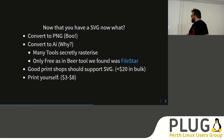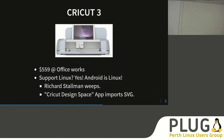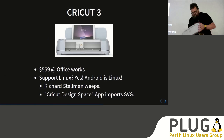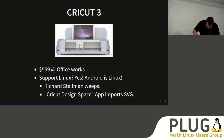Getting someone to print a t-shirt is less than $20 if you do it in bulk and shop around. Or you could get yourself one of these — the Cricut Maker 3. We got it on special, but it's currently $559 at Officeworks.